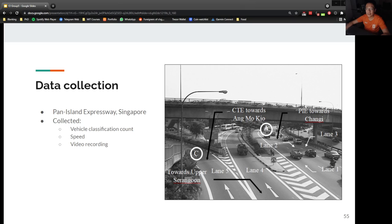Vehicle classification count and speed data was collected from a five-lane section along the Pan Island Expressway in Singapore. The loop detectors are capable of recording vehicle count, vehicle speed, and classification of up to 13 categories. Video recordings were also taken from the overhead bridge to monitor actual traffic flow during data collection. Data was collected at five-minute intervals over a period of six days.